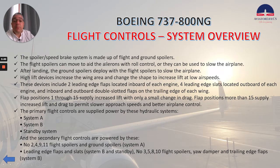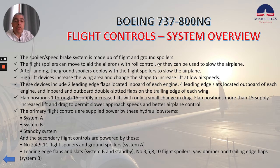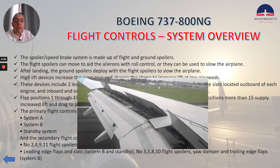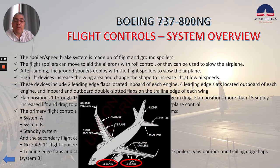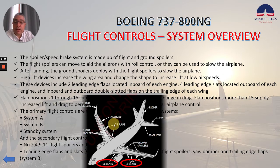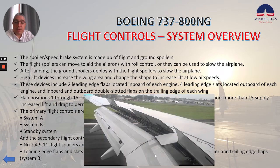The spoiler speed brake system is made up of flight and ground spoilers. The flight spoilers can move to aid the ailerons with roll control, or they can be used to slow the airplane. After landing, the ground spoilers deploy with the flight spoilers to slow the airplane. High-lift devices increase the wing area and change the shape to increase lift at low airspeeds. These devices include two leading-edge flaps located inboard of each engine, four leading-edge slats located outboard of each engine, and inboard and outboard double-slot flaps on the trailing edge of each wing.